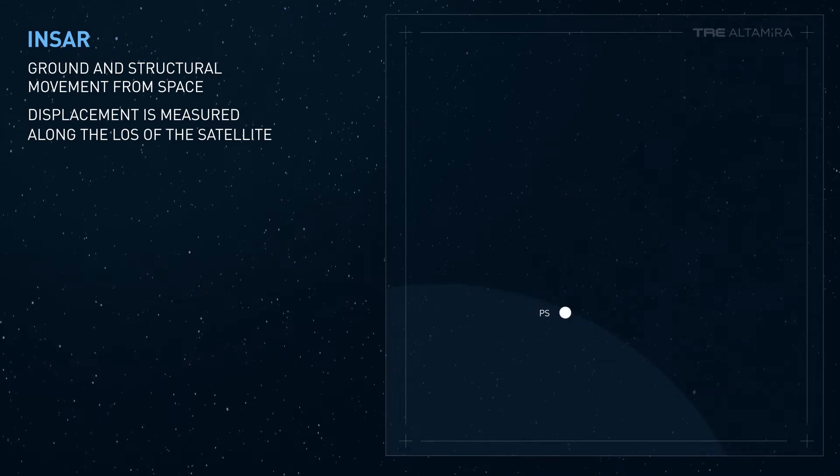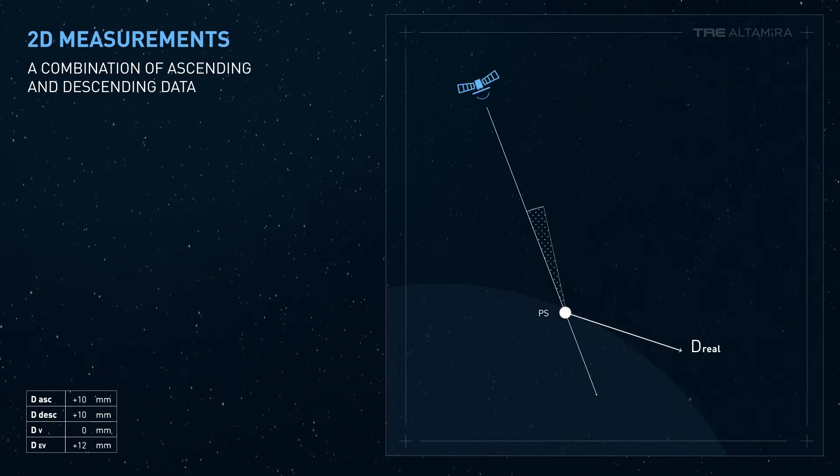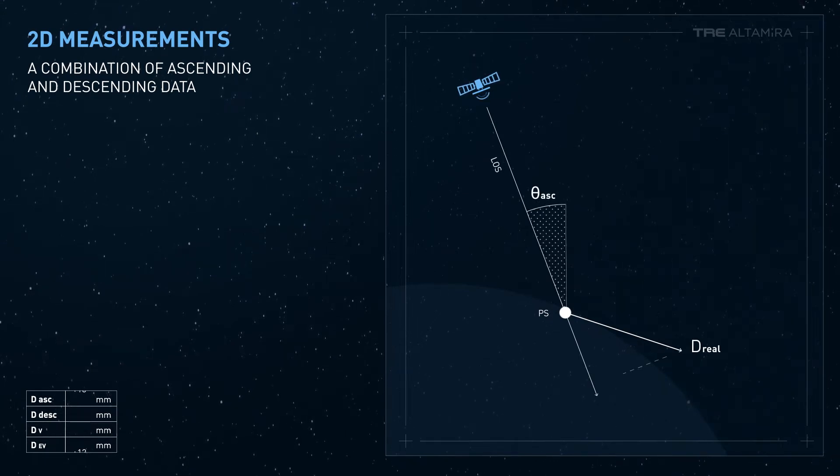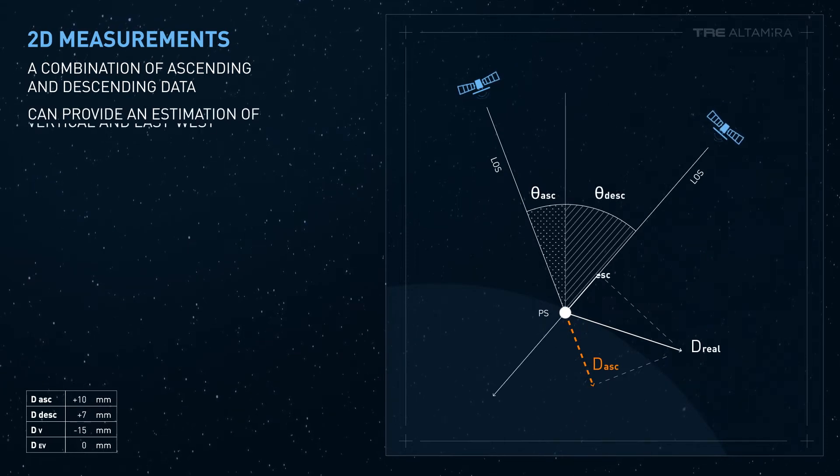By combining ascending and descending datasets acquired over the same area during the same period of time, it is possible to derive 2D measurements that include an estimation of the vertical and east-west displacement.